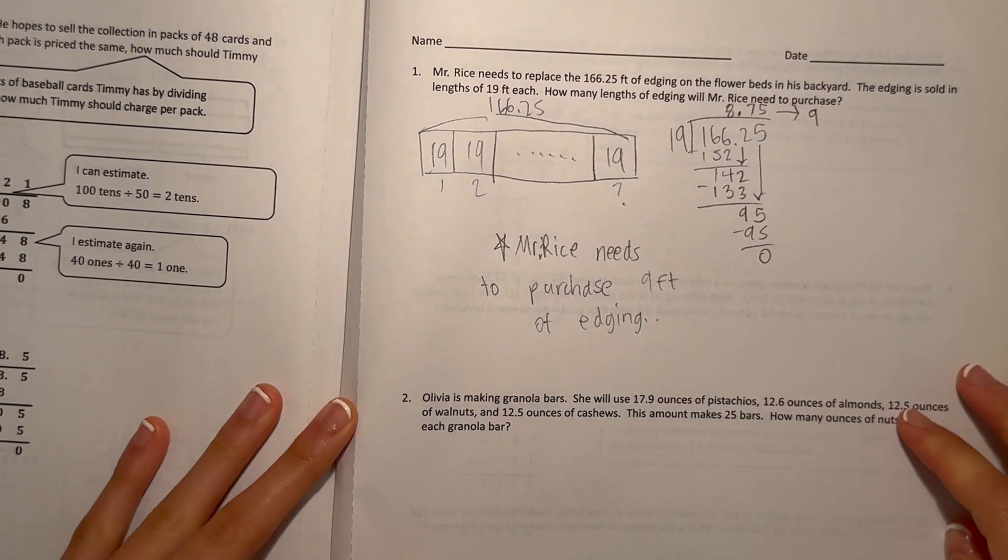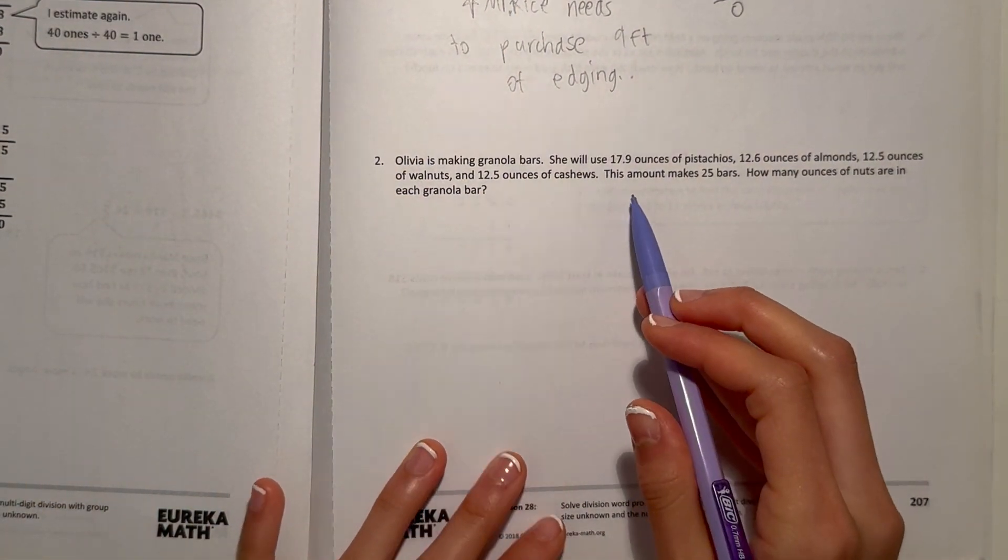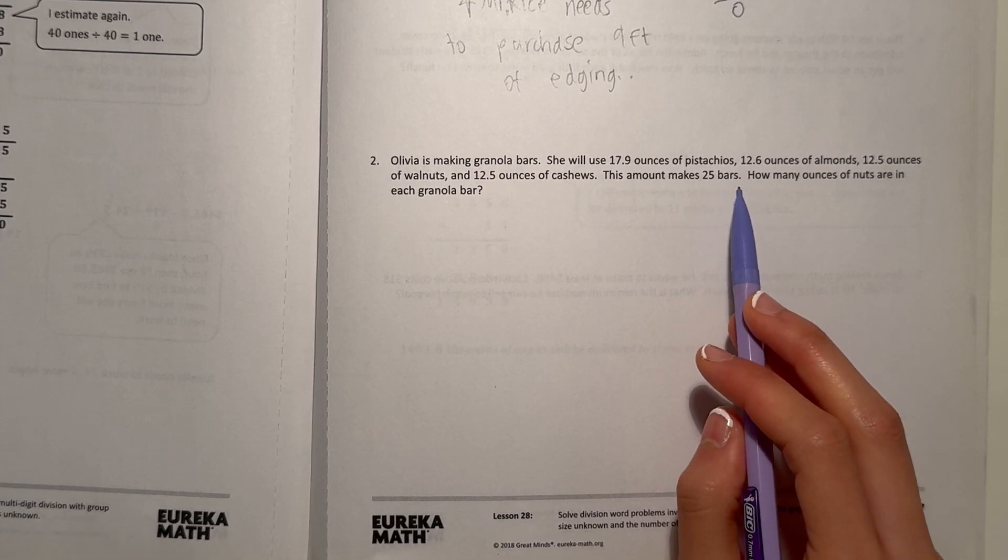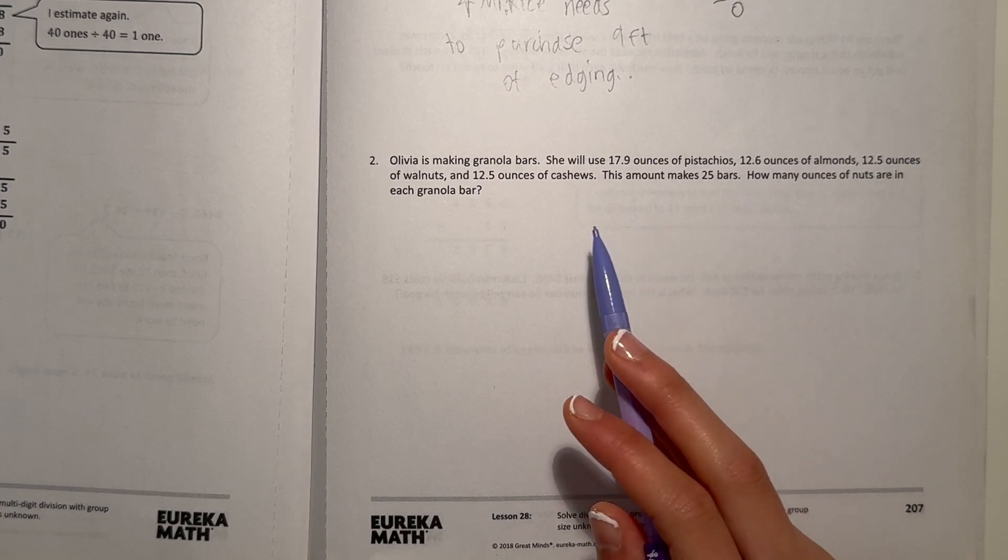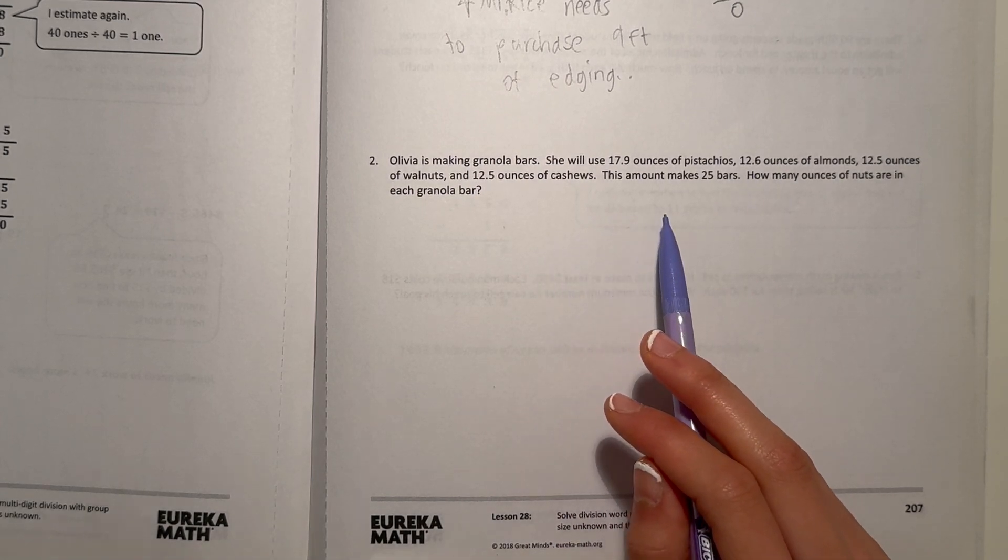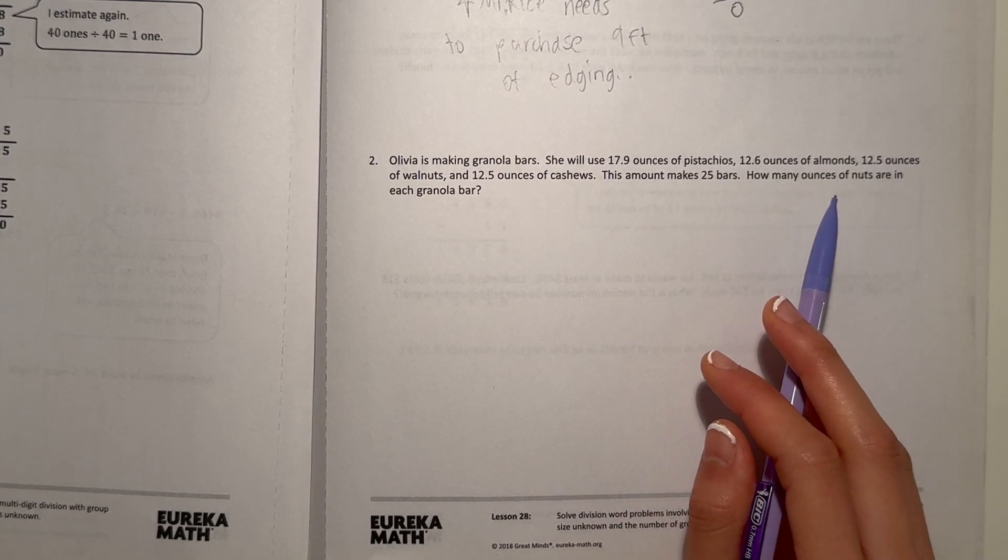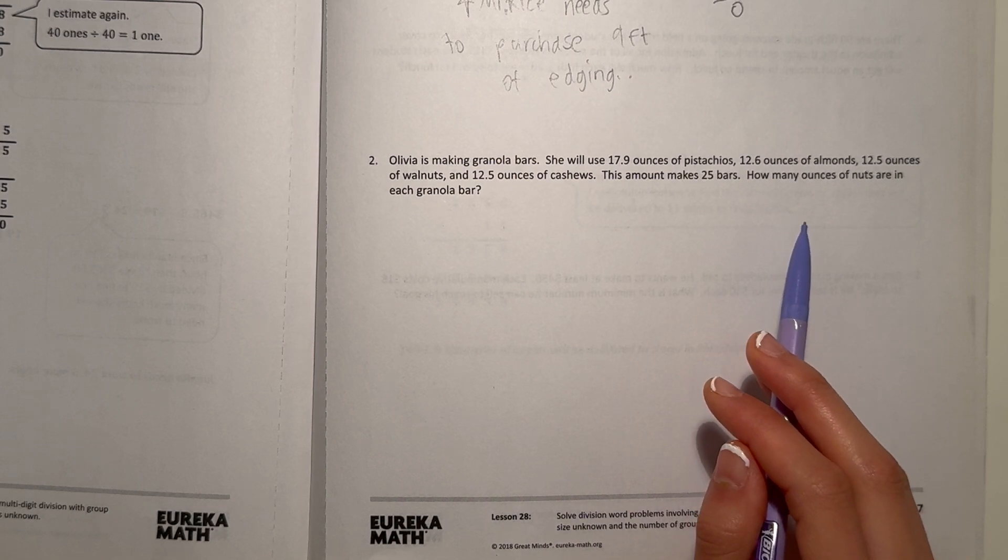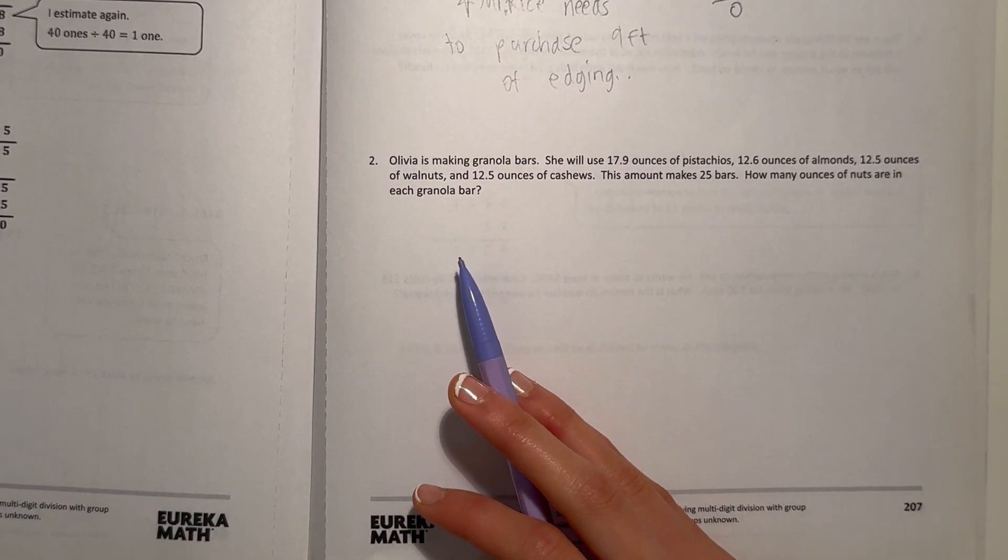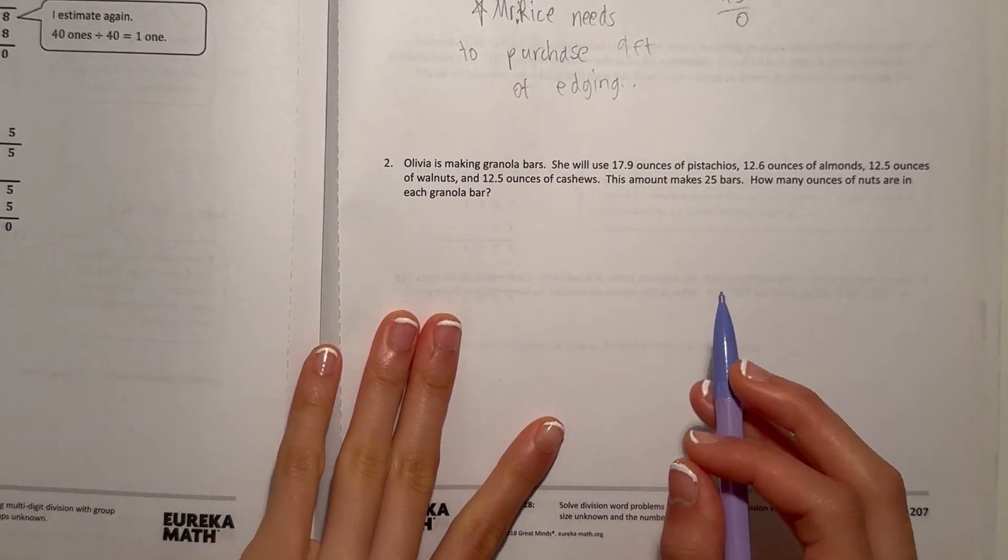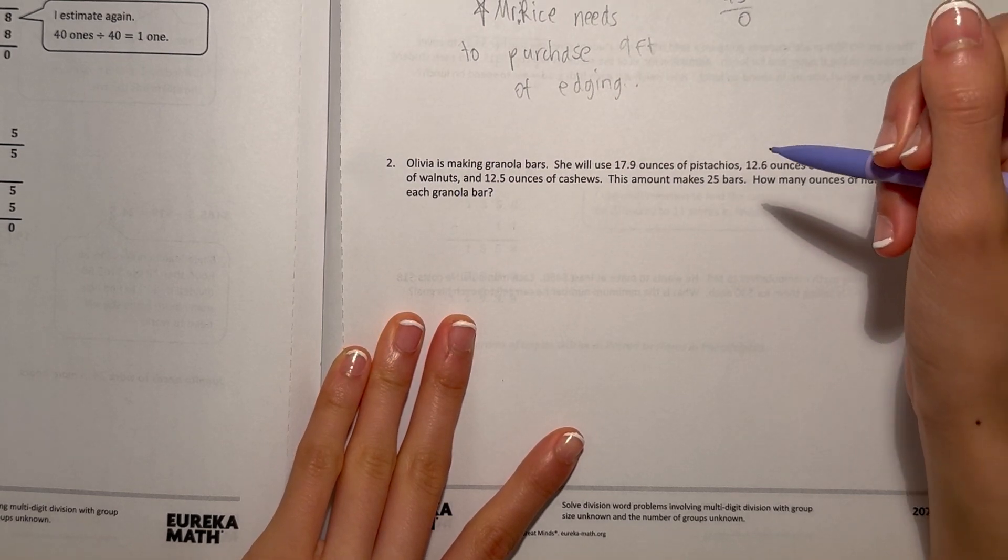Alright, now number 2. Olivia is making granola bars. She will use 17.9 ounces of pistachios, 12.6 ounces of almonds, 12.5 ounces of walnuts, and 12.5 ounces of cashews. This amount makes 25 bars. How many ounces of nuts are in each granola bar? So first we need to find out how many total ounces are used.